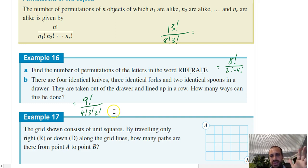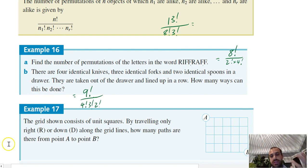Now, this question, this next question is a really interesting one. I've never really seen anything quite like it before, or at least I haven't tried to solve a question like it before, using this method. The grid shown consists of unit squares. By travelling only right or down, how many paths are there from point A to point B?